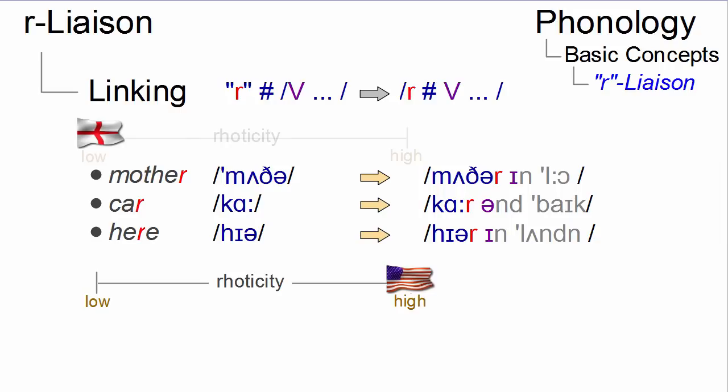American English, by contrast, is highly rhotic, and we have an R even in isolation, as in mother, car, or here. So, the linking R is a standard feature of it anyway.